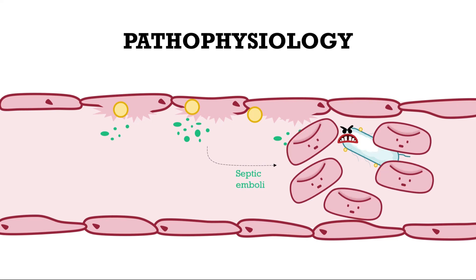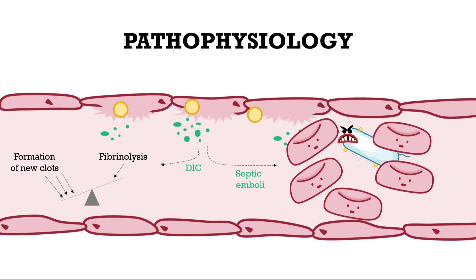The procoagulants can also trigger DIC, in which the coagulation pathway is outweighing fibrinolysis, depleting the supply of platelets and clotting factors. Fibrin degradation products are released into the circulation and interfere with platelet aggregation and clot formation, making hemostasis even more difficult.